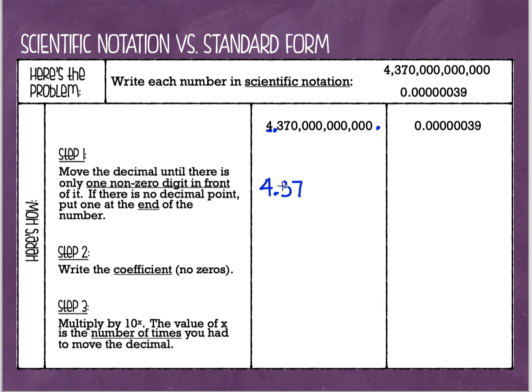Step three is we're going to multiply this by 10. Scientific notation is always times 10. And to figure out the exponent, we are just going to count the number of times that we had to move the decimal. So if my decimal started here at the end, and I had to move it all the way over here between the four and the three, let's count how many times we had to move it. So 1, 2, 3, 4, 5, 6, 7, 8, 9, 10, 11, 12 times. My exponent is going to be 12.